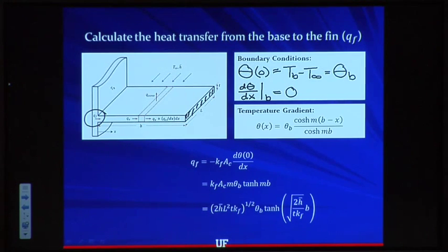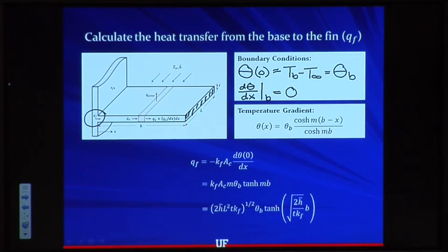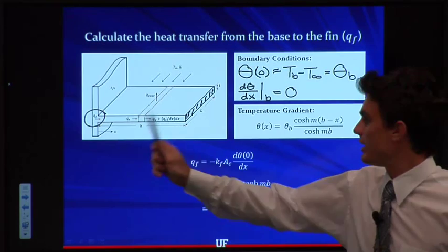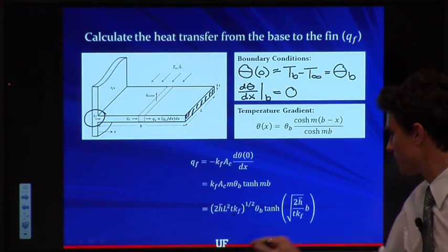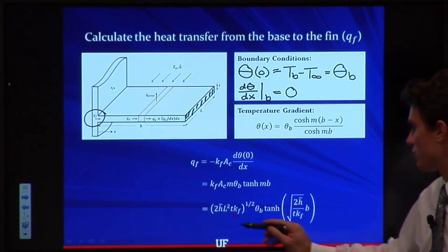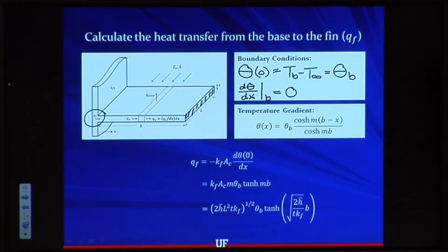Making back substitutions for the cross-sectional area and for m, which we discussed on the last slide, we arrive at the expression for qf. The heat entering the fin from the base is a function of fin thickness, fin length, and fin height. So we can now determine the heat convected away from the microprocessor based on the geometry and the flow conditions.